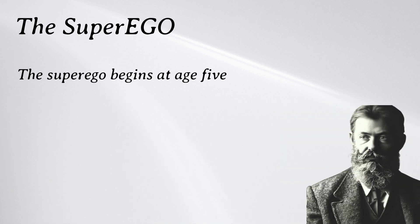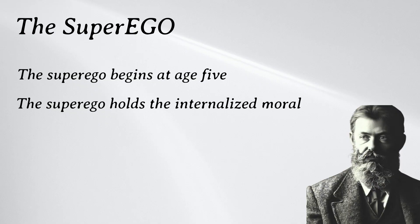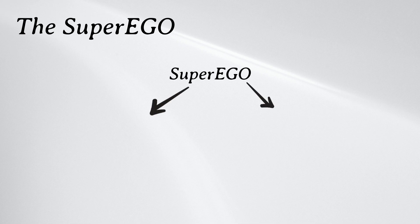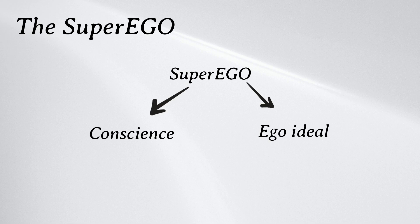Number three is the superego. The last component of personality to develop is the superego. According to Freud, the superego begins to emerge at around age five. The superego holds the internalized moral standards and ideals that we acquire from our parents and society — our sense of right and wrong. The superego provides guidelines for making judgments. The superego has two parts: one is the conscience, and the second one is the ego ideal. The conscience includes information about things that are viewed as bad by parents and society. These behaviors are often forbidden and lead to bad consequences, punishments, or feelings of guilt and remorse.